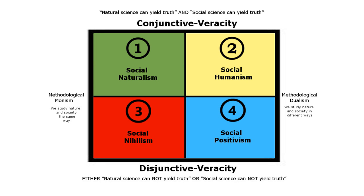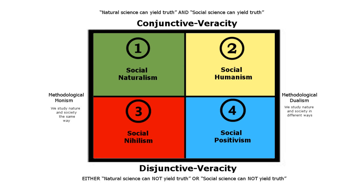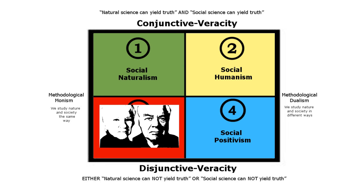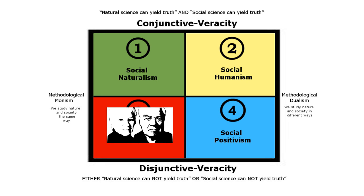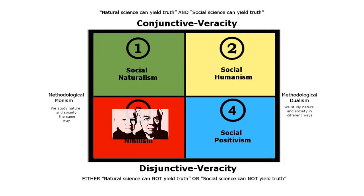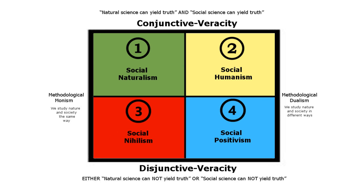The next option, social nihilism, claims that the study of society and nature are continuous, but that the methods under which they are unified cannot yield truth — neither about nature nor about society. This is the position of those like Sandra Harding or Richard Rorty when they come dangerously close to suggesting that science is a mere ideological instrument, that it's an exercise in privilege, hung from a dubious appeal to a noumenal reality of which nothing can be truly known.